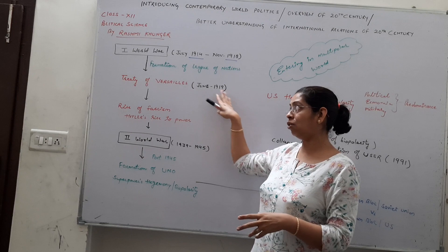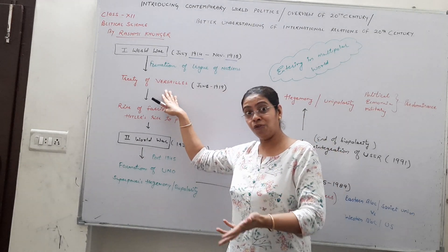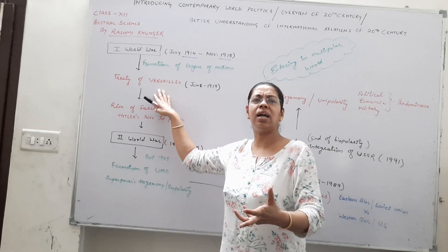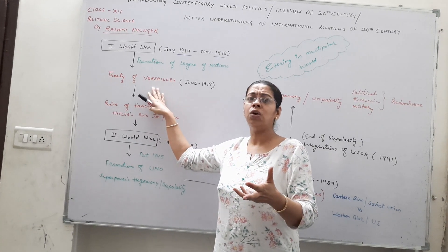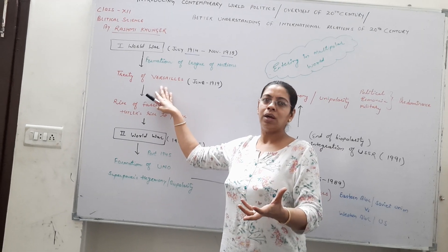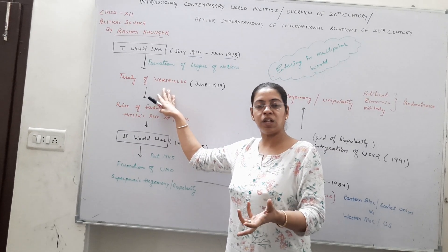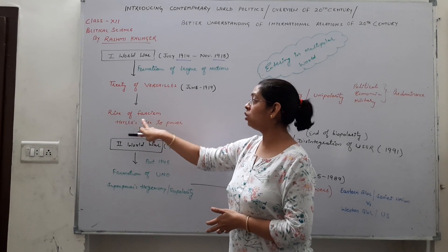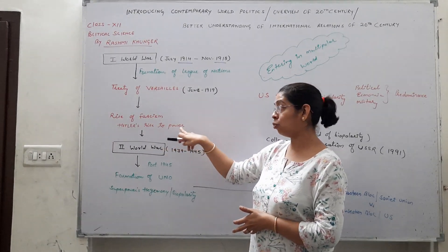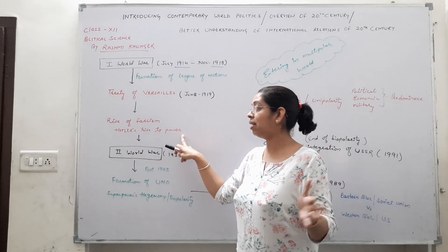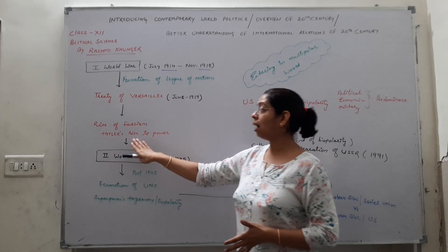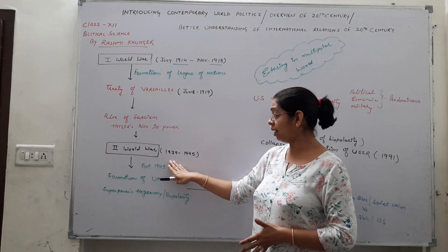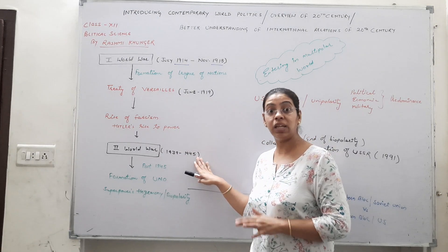The Treaty of Versailles was an unfair treaty, and the losing countries were very dissatisfied with it. Because of this dissatisfaction, the Second World War occurred. Then came the rise of fascism and Hitler's rise to power, which you have studied in detail in 9th class. Then the Second World War, with the time period 1939 to 1945 — very, very important.